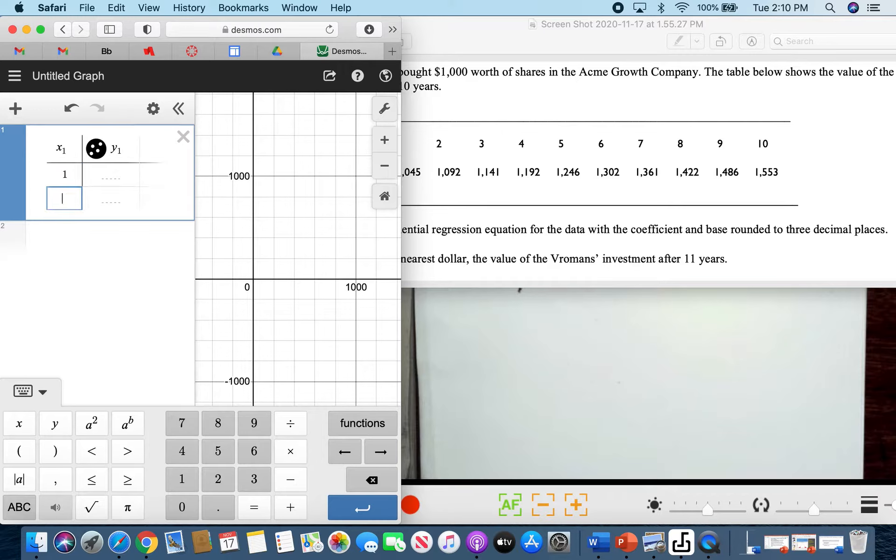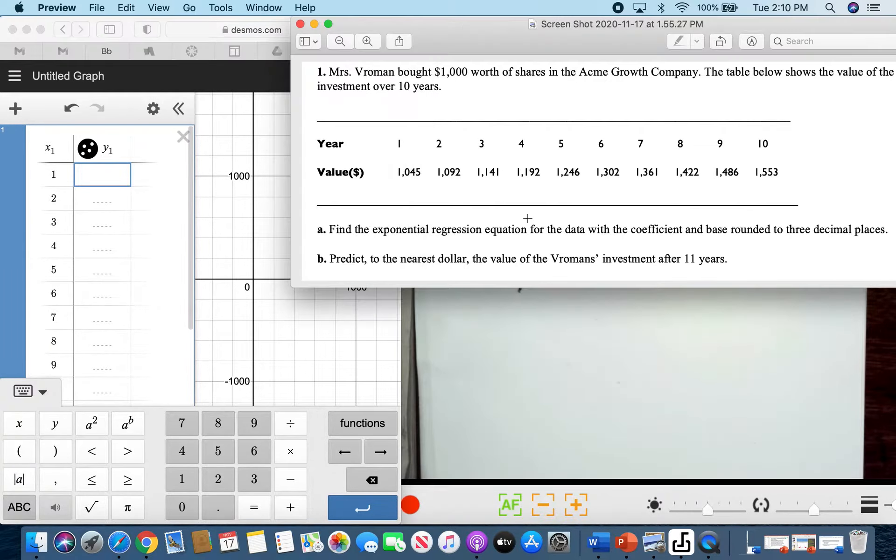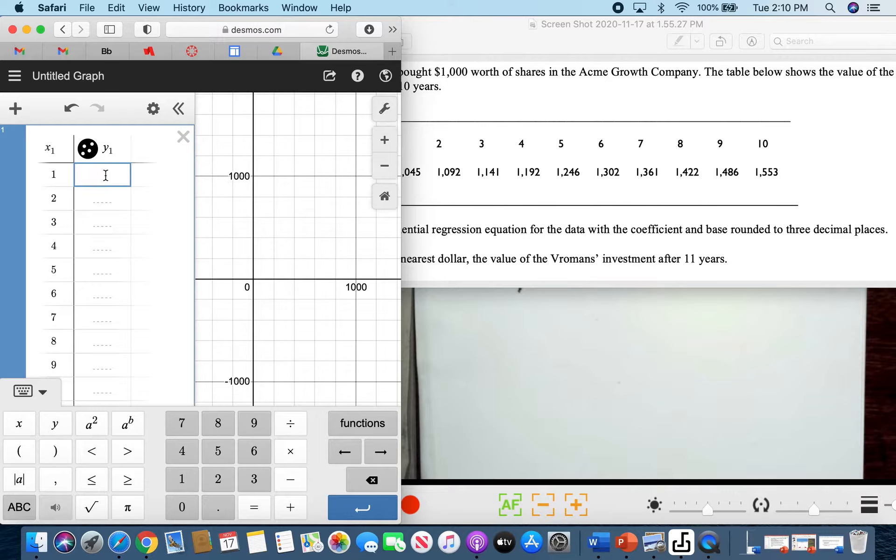So you have first year, second, three, four, five, six, seven, eight, nine, and ten. And then our values. It's really important that you are accurate here because if you change one number, you change the equation.